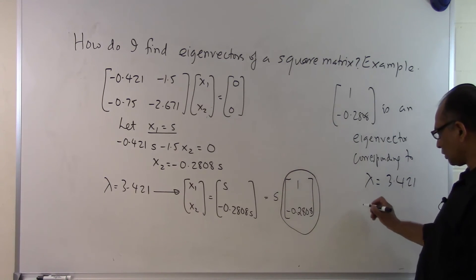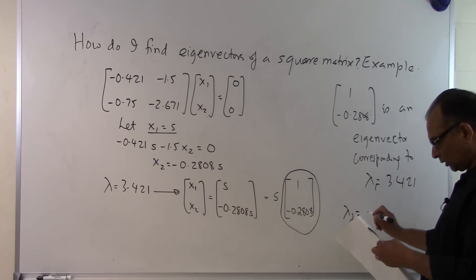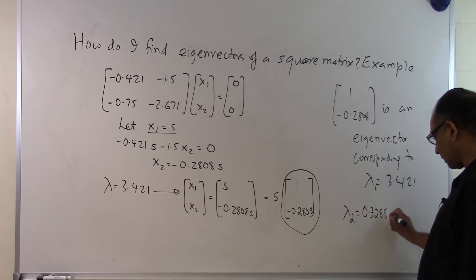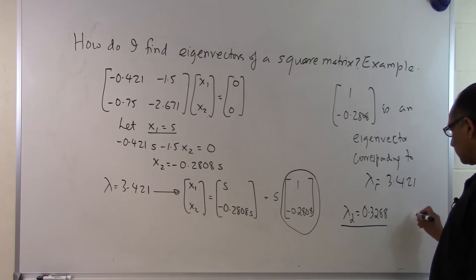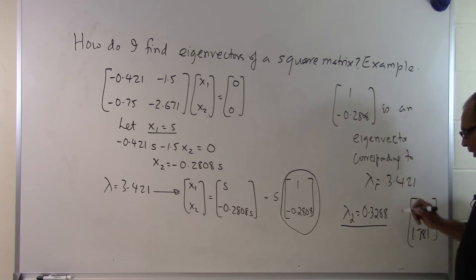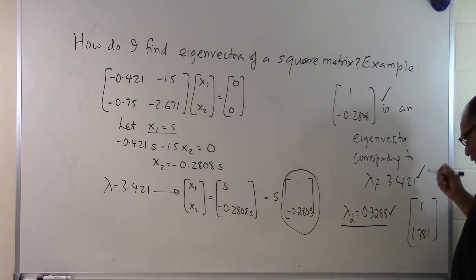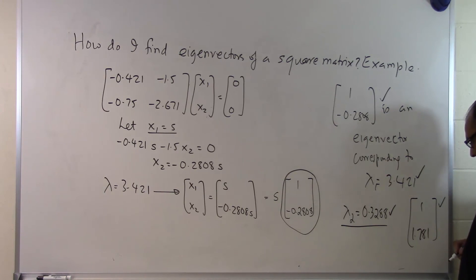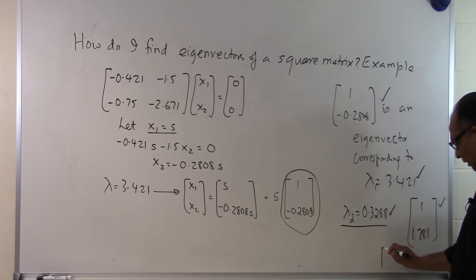You can do the same thing corresponding to lambda equal to 0.3288, which was the other eigenvalue. Following the same procedure, the eigenvector turns out to be 1, 1.781. You can do that as part of your homework. That is the end of this segment.